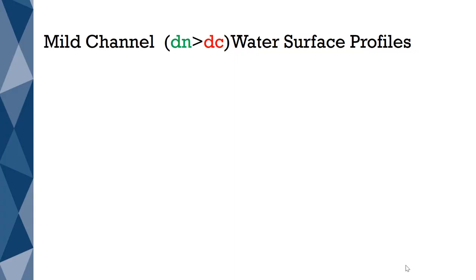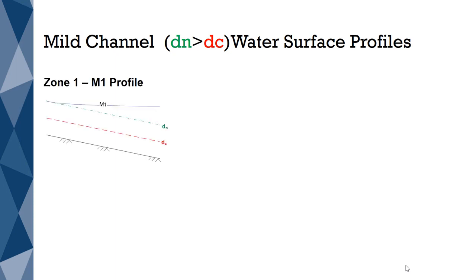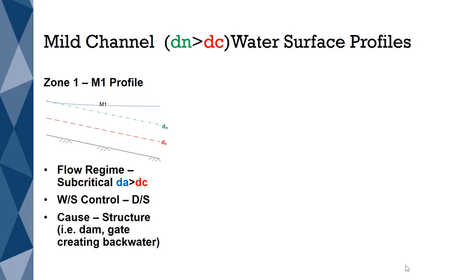The first channel type to discuss is a mild channel, where the normal depth is greater than the critical depth. An M1 profile is formed in Zone 1, where the flow regime is subcritical. By definition, a subcritical flow occurs when the actual depth is greater than the critical depth. Flows that are subcritical are always controlled downstream. For an M1 profile, this is a result of a hydraulic structure that causes backwater, such as a dam.